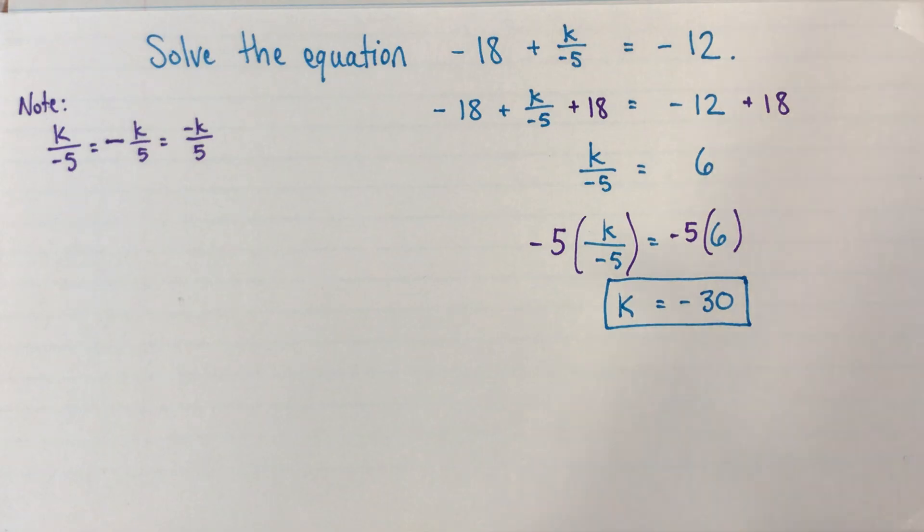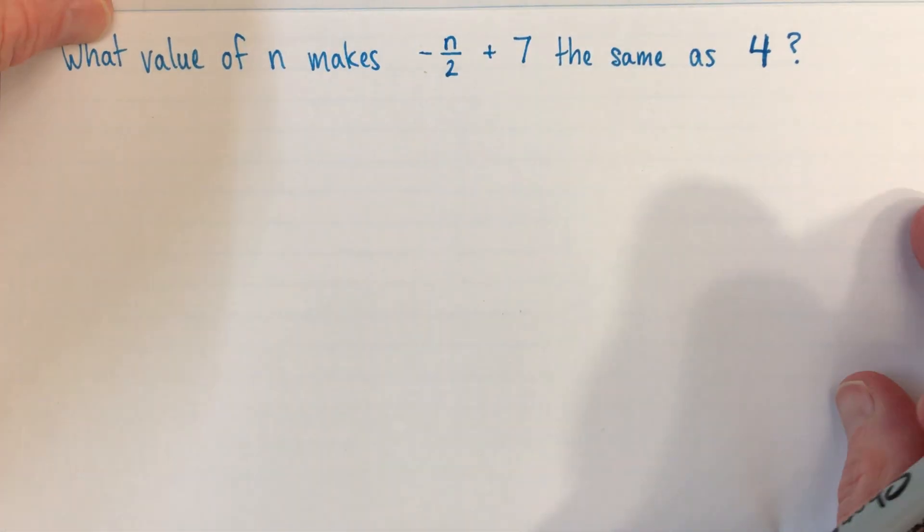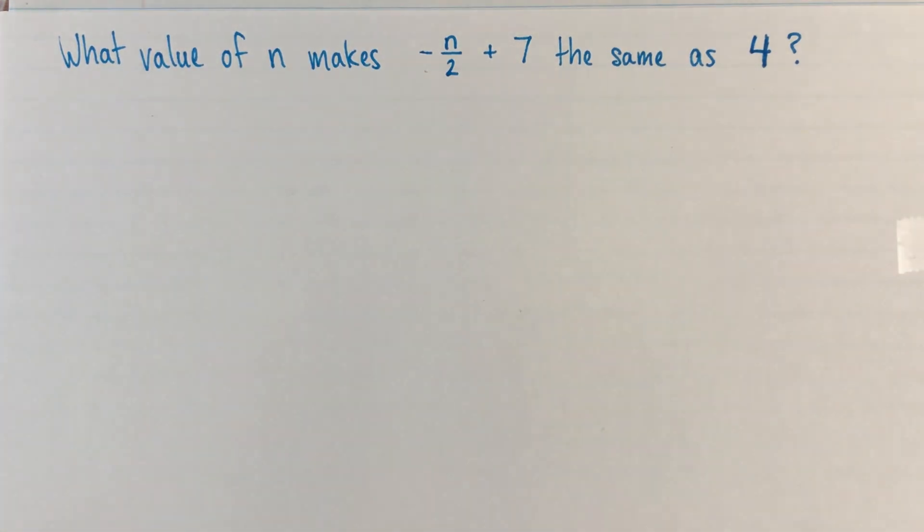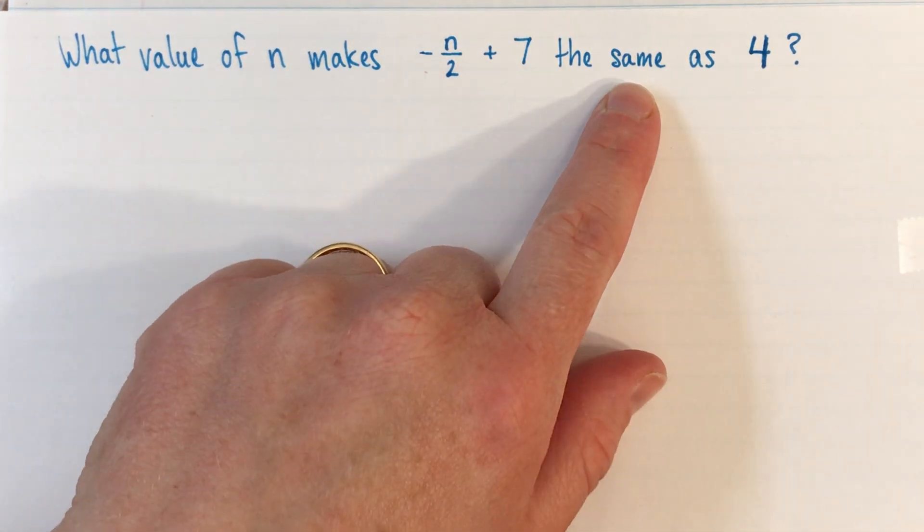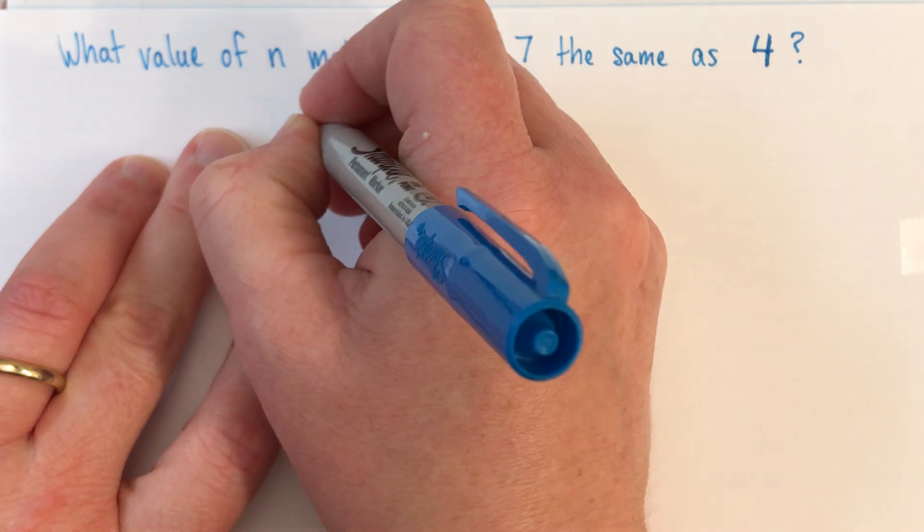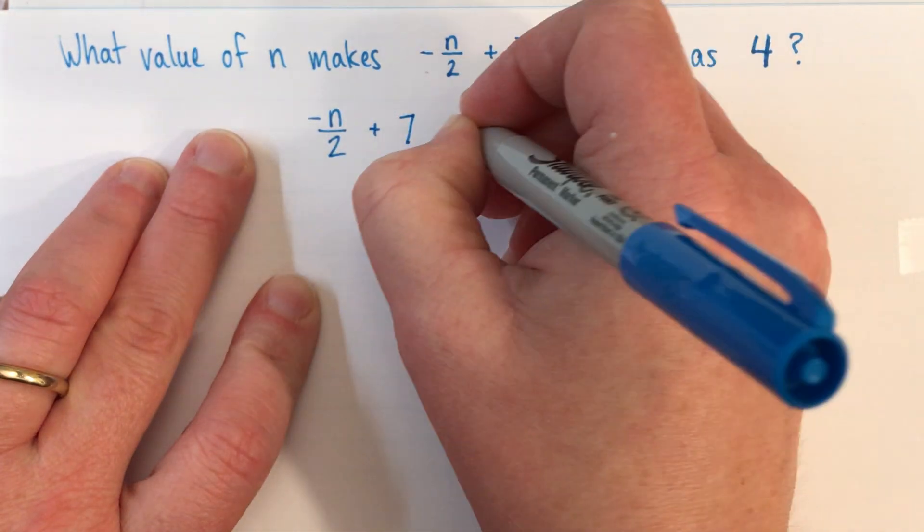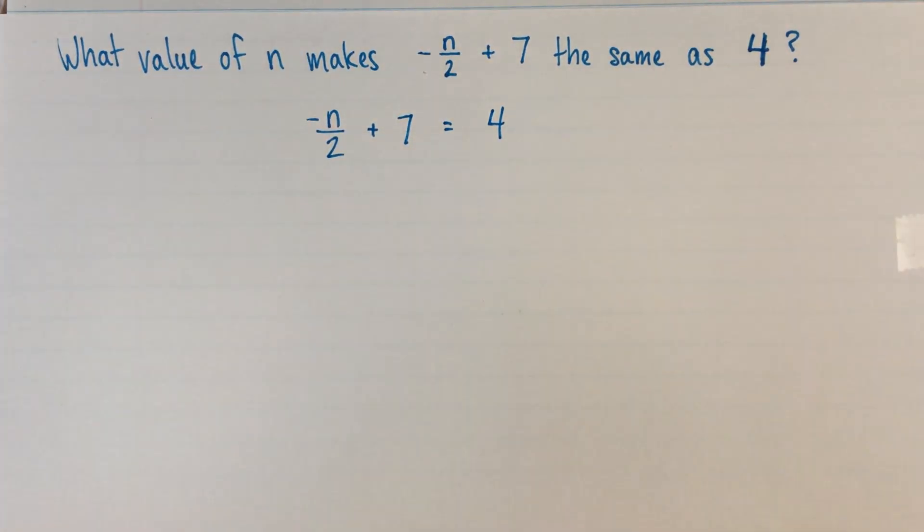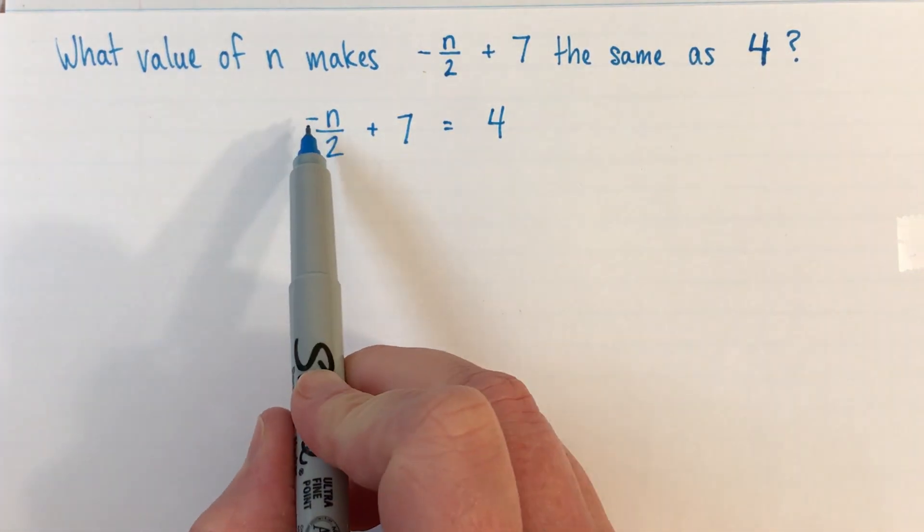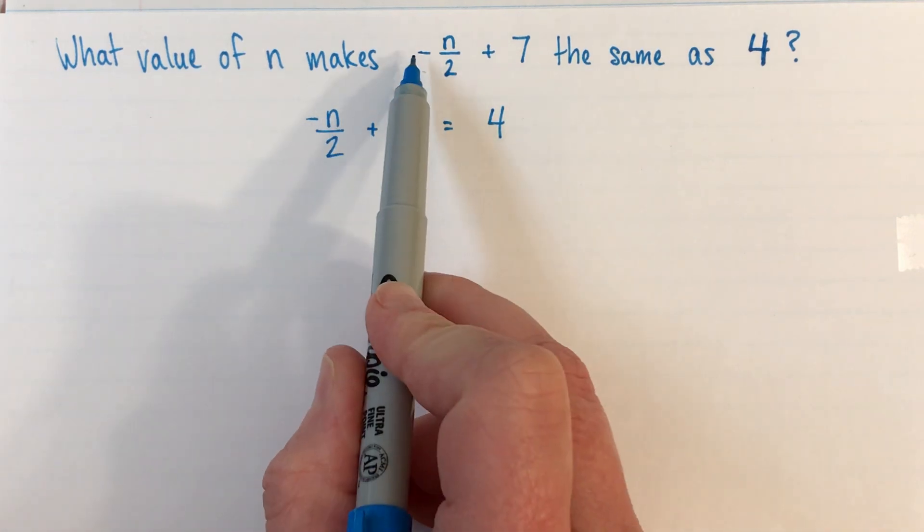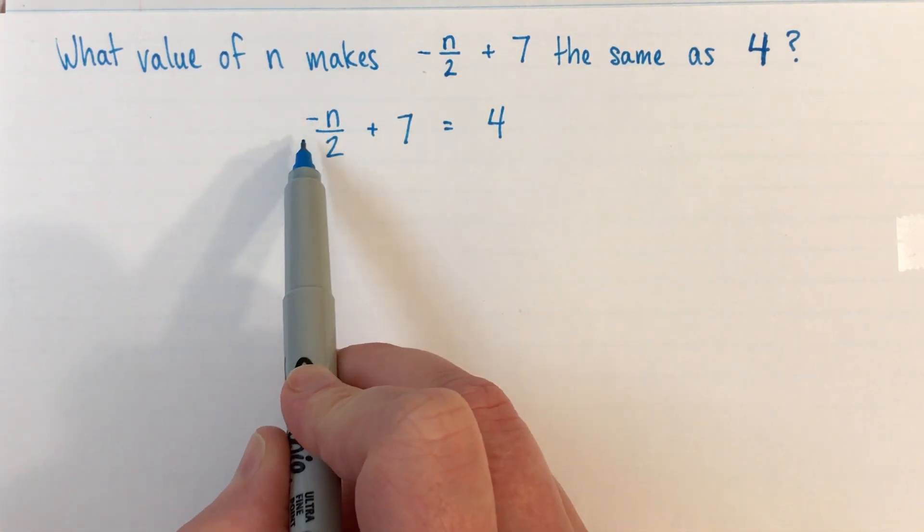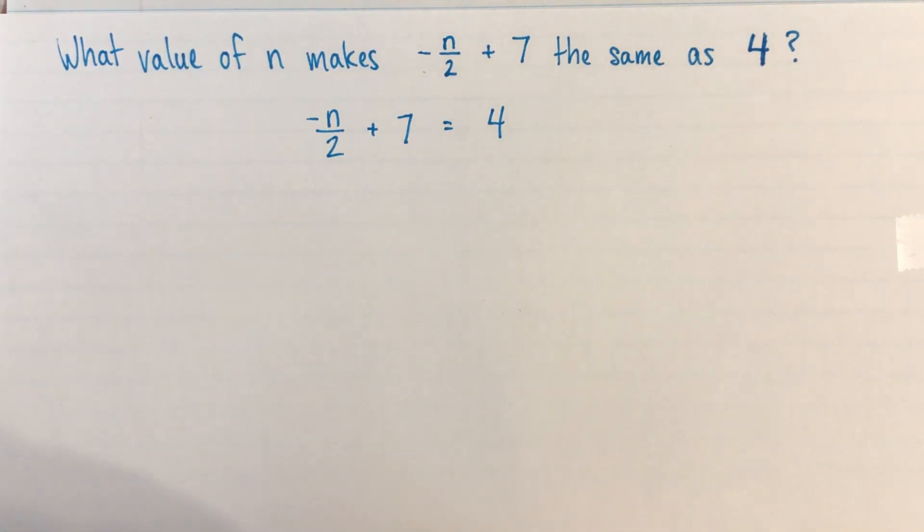I'll do another example now. So this one asks us what value of n makes -n/2 + 7 the same as 4. And of course that means the same as equal to. So maybe we'll write that down first. -n/2 + 7 = 4. And I did this sort of even by accident here. It was just I was writing a bit messily, but I took my negative sign from out front and I put it on the top. We can put it on the top or the bottom. We can interchange just like that little note we made on the first question.